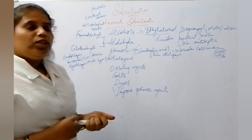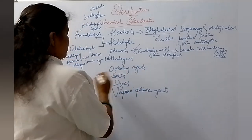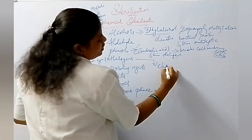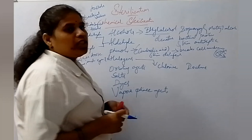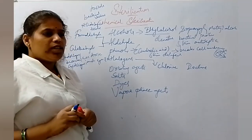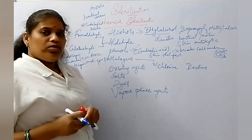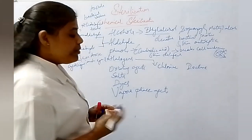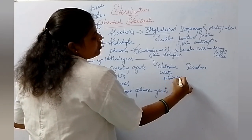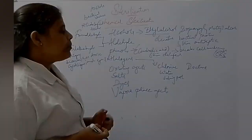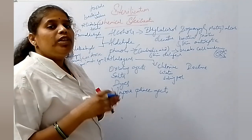In halogens we have two types: chlorine and iodine. Chlorine has bactericidal and virucidal activity, and also some sporicidal activity. Chlorine also acts as bleaching powder, which we use in swimming pools. Hypochlorite agents, when mixed with chlorine, form hypochlorous acid.